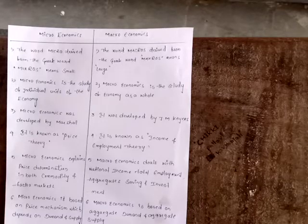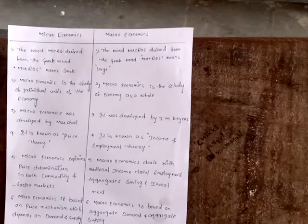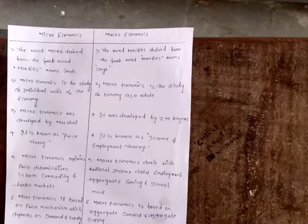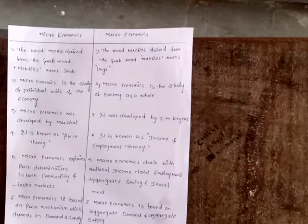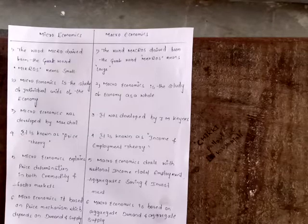In the first one, microeconomics. The term microeconomics is derived from the Greek word 'micros,' which means small. Microeconomics studies about the individual parts of the economy. For example, individual consumers, firms, industry, income, savings, price, etc. Microeconomics was developed by Alfred Marshall. It is also known as price theory.